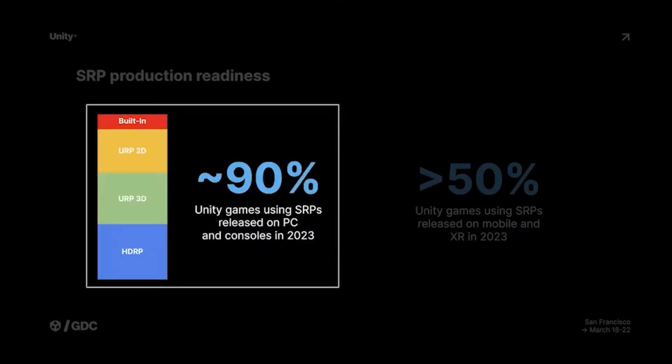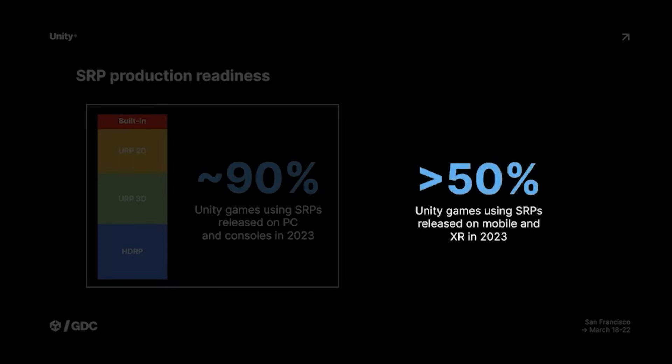Most people who released games in 2023 were using scriptable render pipelines — so URP, HDRP, in 2D or 3D. And over 50% are actually releasing for mobile and XR platforms in that period of time.